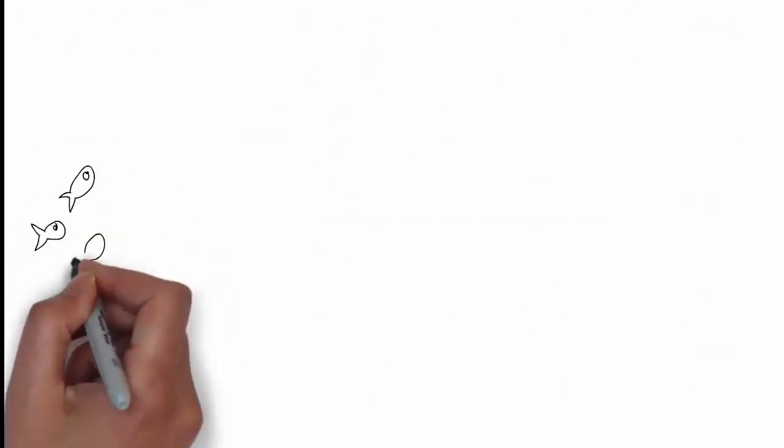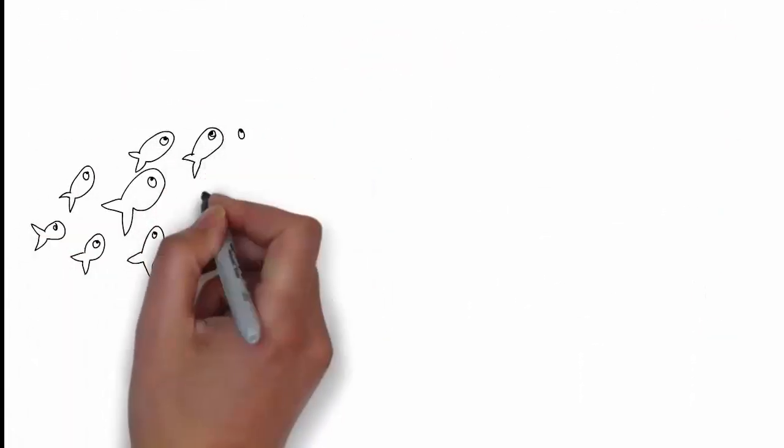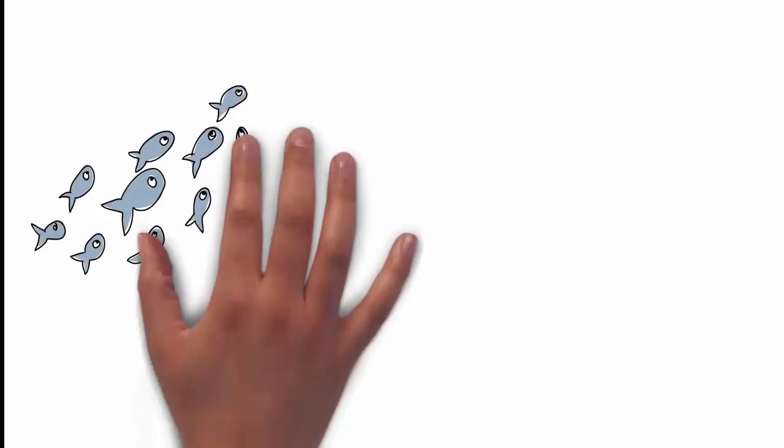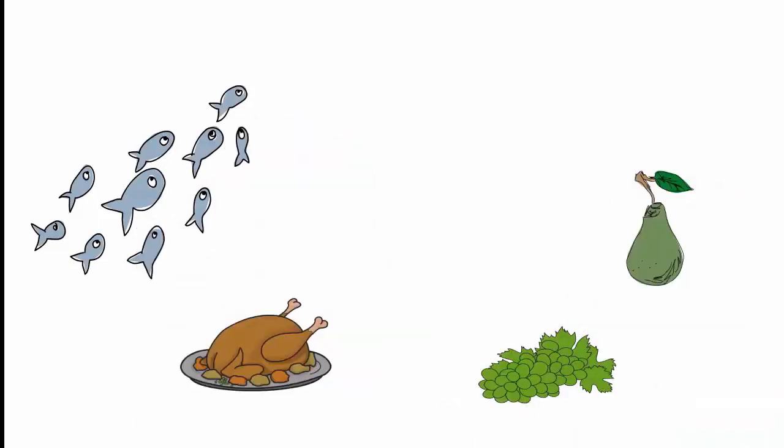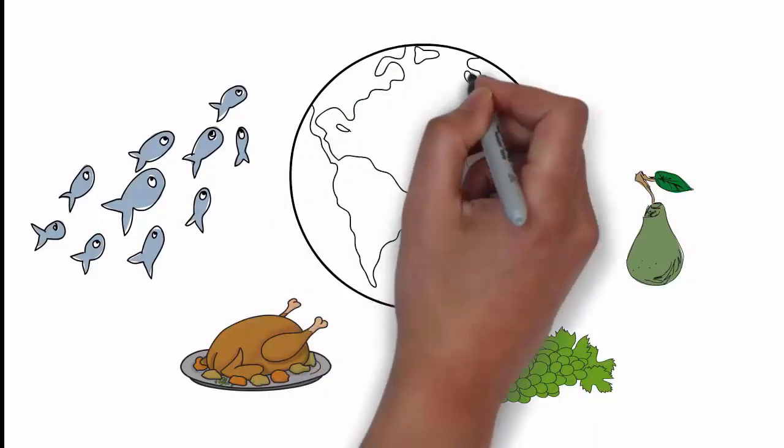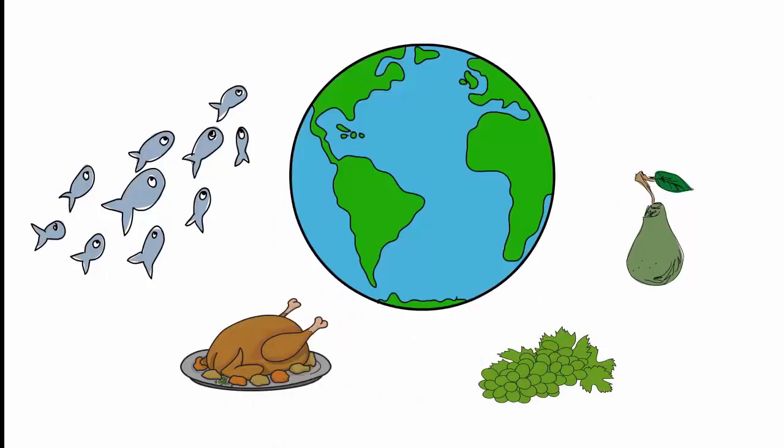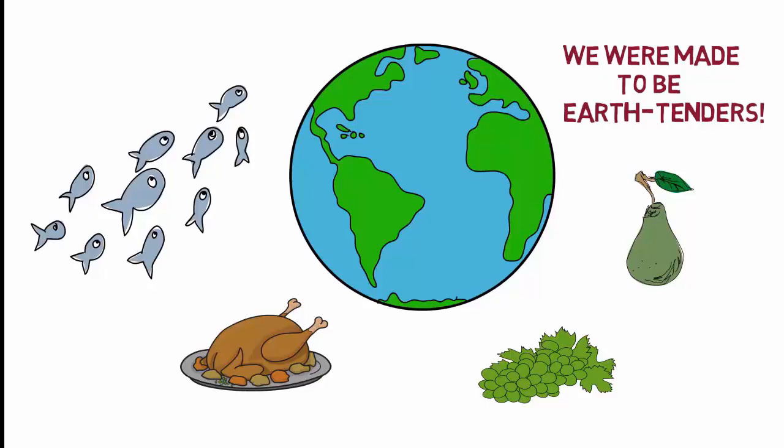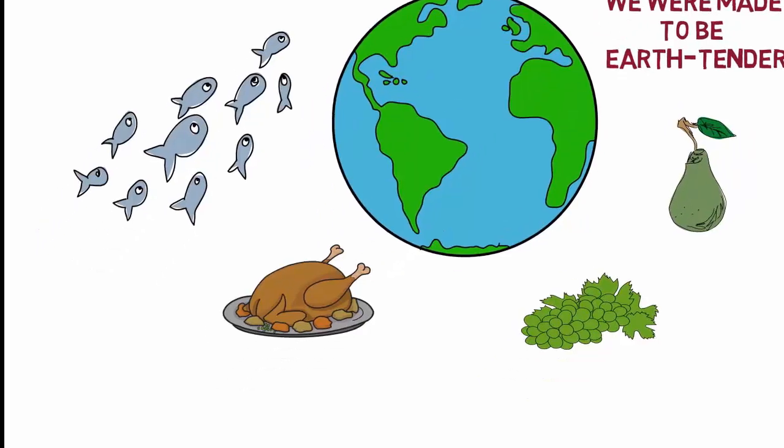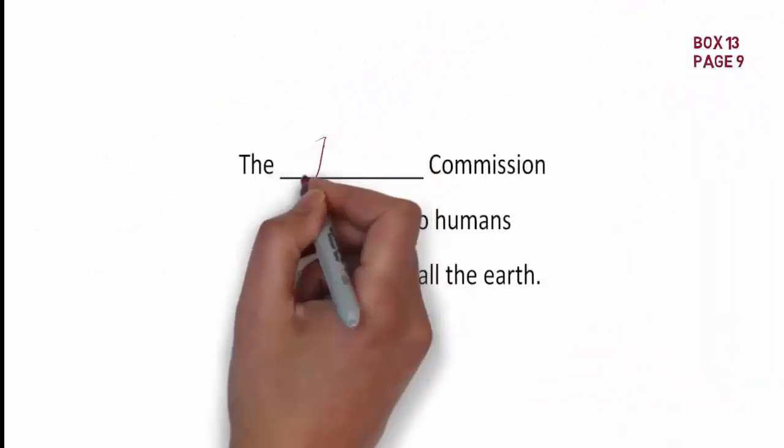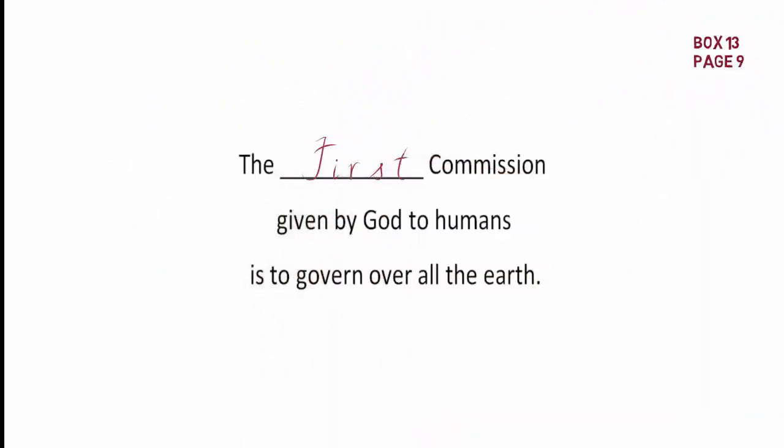God's clear intention for human beings was that we would govern over all of creation: the fish, the birds, the plants, the entire earth. The fact is, you and I were created to be earth tenders. This is the role and function God had in mind when He created us in His likeness and image. It's God's order of things. The first commission given by God to humans is to govern over all of the earth.